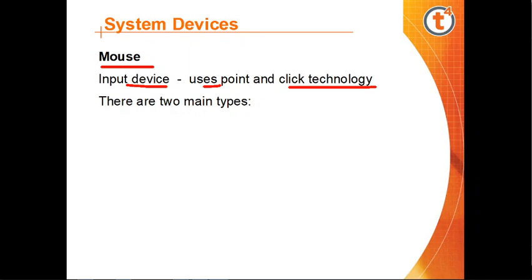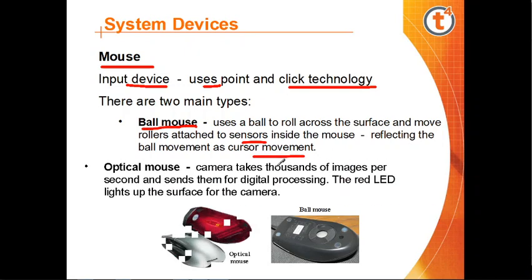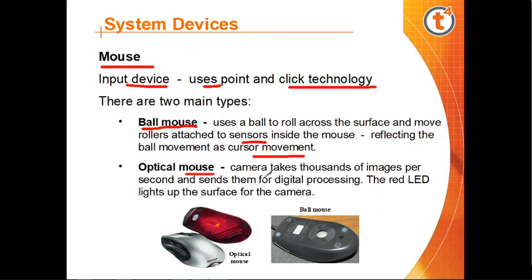There are two main types of mouse. The ball mouse uses a ball that rolls across a surface and moves a roller attached to a sensor, reflecting ball movement as cursor movement on screen. The optical mouse uses a camera that takes thousands of images per second and sends them for digital processing, with a red LED light illuminating the surface for the camera.